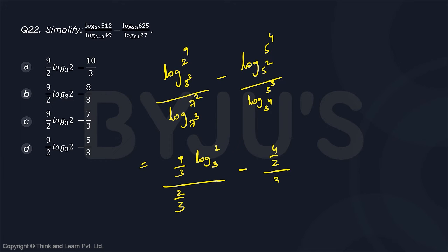2 divided by 3 by 4, because log 5 base 5 and log 3 base 3 will be same. So this will become 9 by 3 into 3 by 2 log 2 base 3, minus 4 by 2 into 4 by 3.